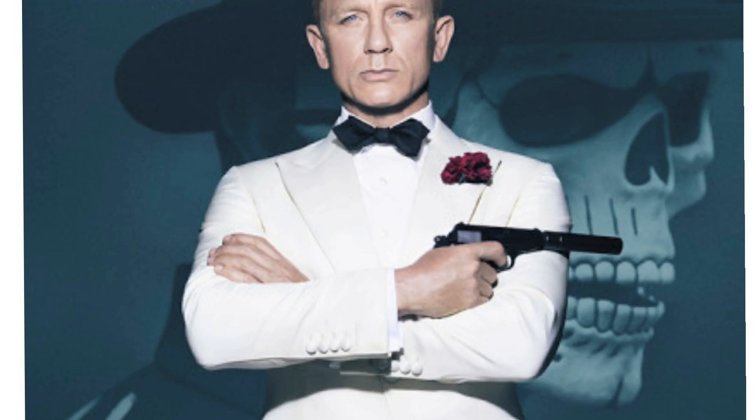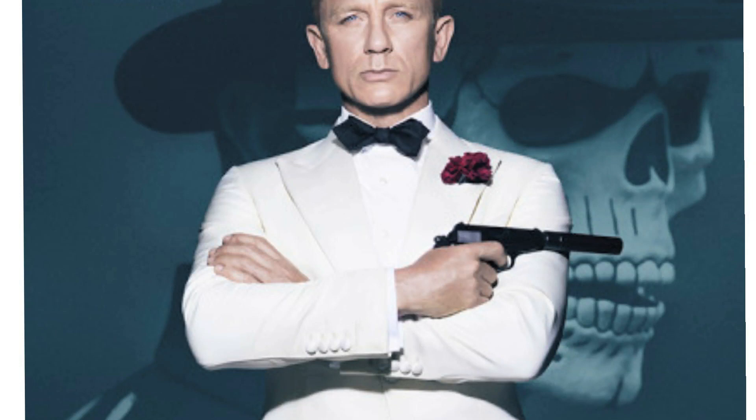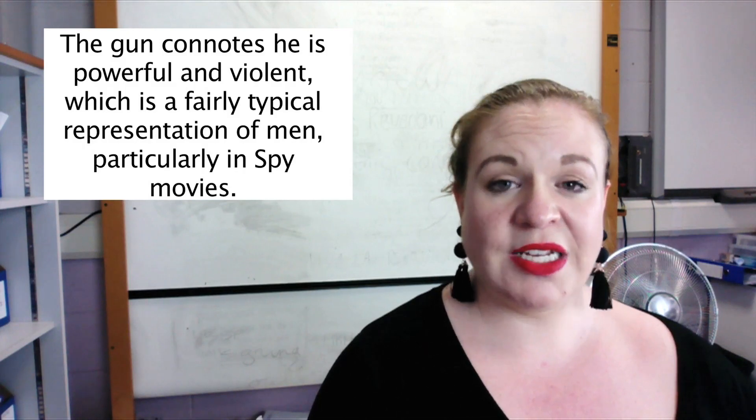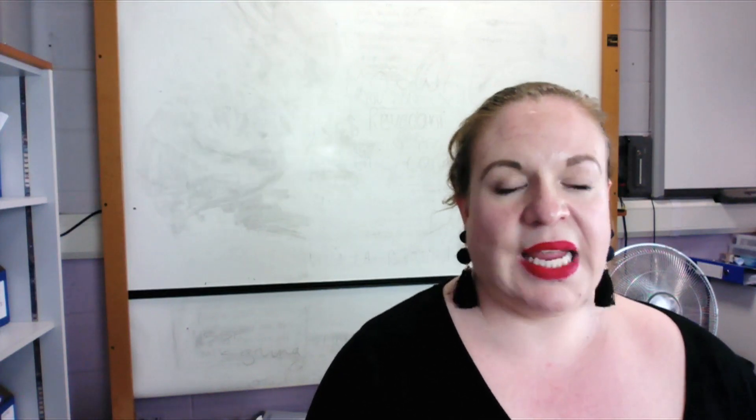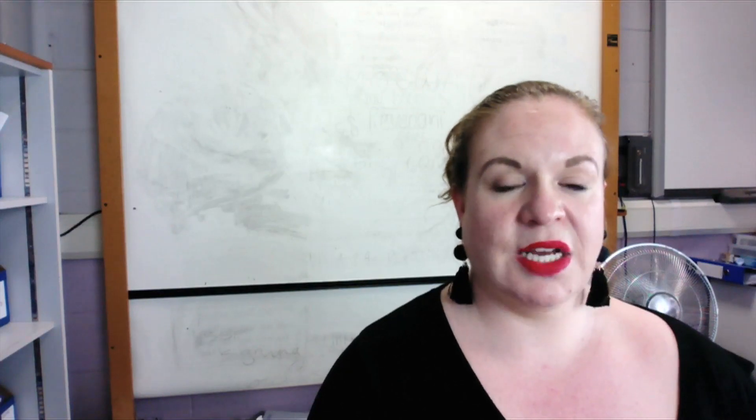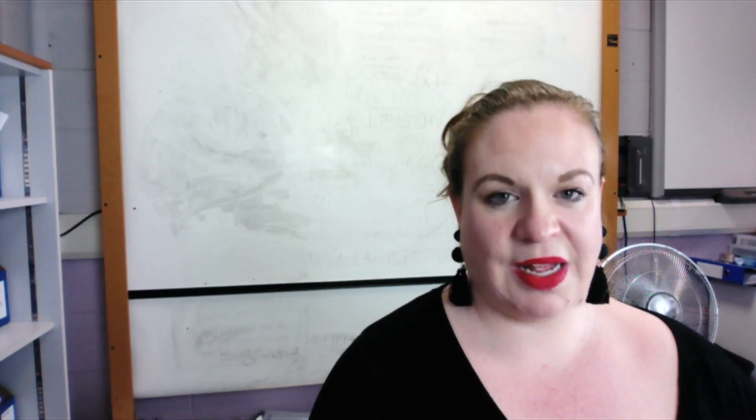Bond is holding a gun. This prop normally suggests that the character is quite aggressive, quite violent, quite dominant and powerful as well, and makes him seem like the kind of heroic character that we expect in most films like this.